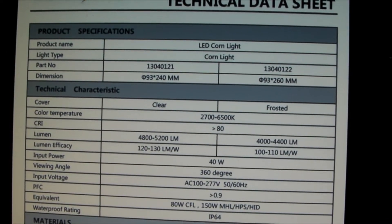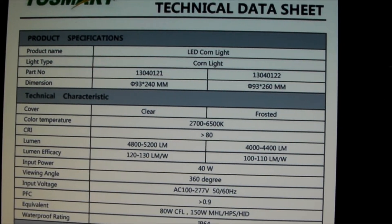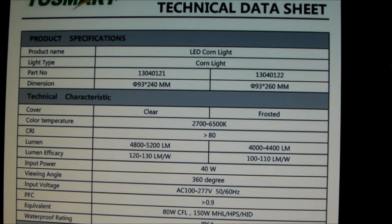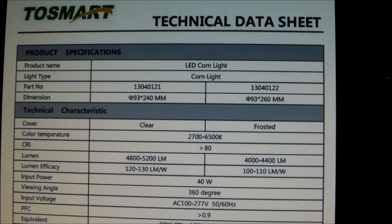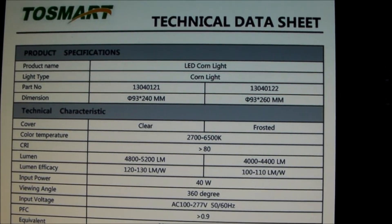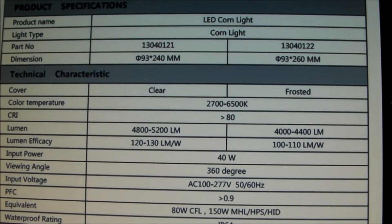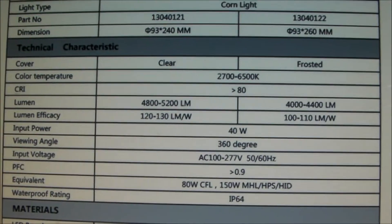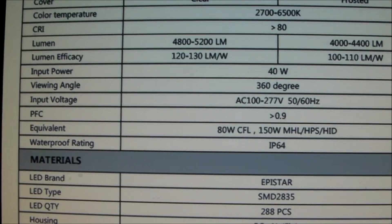So here are the specs for the LED corncob light that I purchased. It's going to have a color temperature of somewhere between 2700 and 6500 Kelvin. It's going to be somewhere between 4800 and 5200 lumens. And you can see this equivalent line.